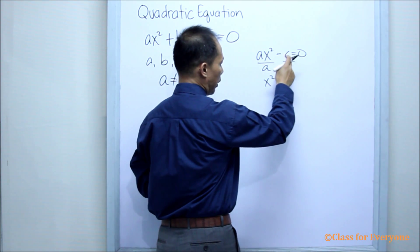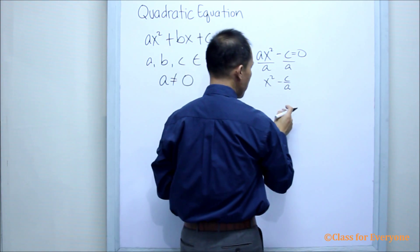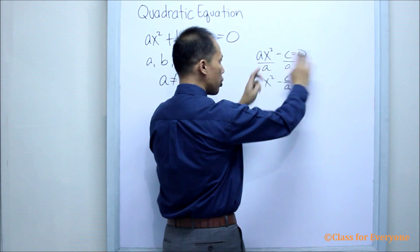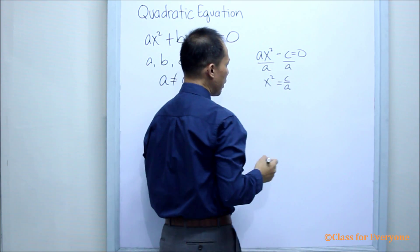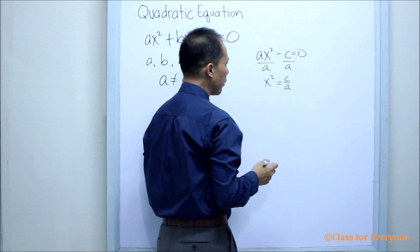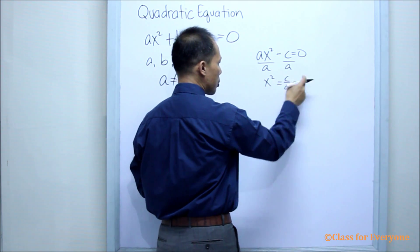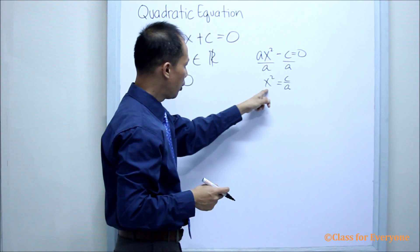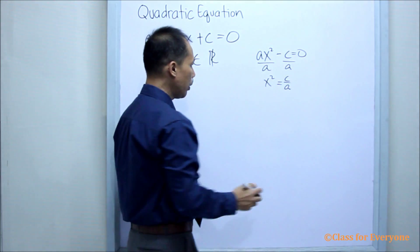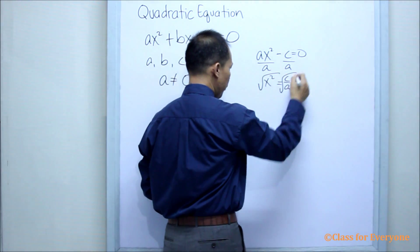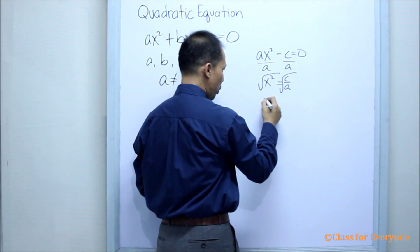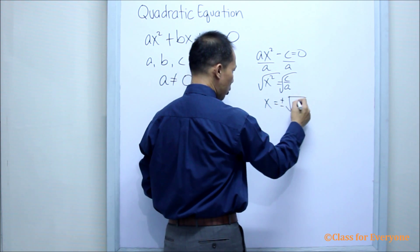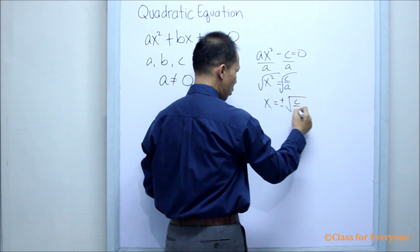Then get the opposite of negative C over A. It will be positive and added to both sides of the equation, which gives us X squared equals C over A. Now, we are looking for the value of X, so get the square root of both sides. We now have X equals plus or minus the square root of C over A.